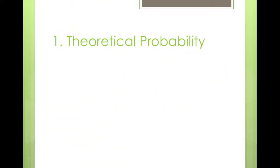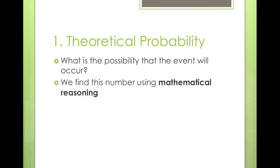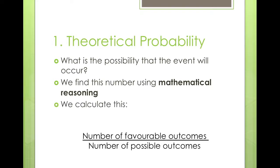Beginning with the first part, I'm going to give you definitions for three different types of probability. The first one is theoretical probability — what is the possibility that the event will occur? We find this number using mathematical reasoning and calculate it as the number of favorable outcomes over the number of possible outcomes, meaning what you are looking for over the total number of things that there are.